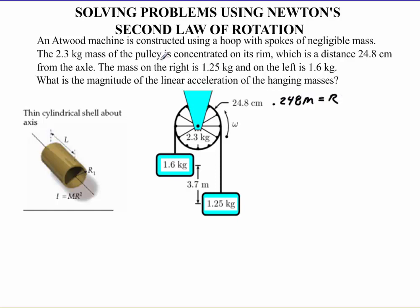Here I have a mass on the right of 1.25 kg and on the left of 1.6 kg. We're going to find the magnitude of the linear acceleration of the hanging masses. To do that, the first thing I'd recommend is to go ahead and draw a free body diagram of all three objects — one for the 1.6 kg mass, one for the 1.25 kg mass, and one for the pulley system itself.